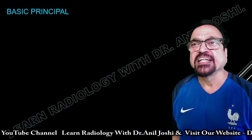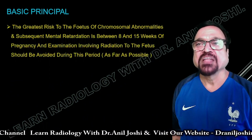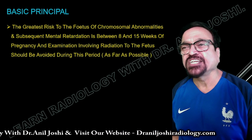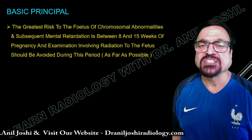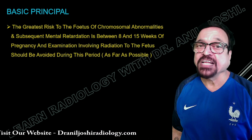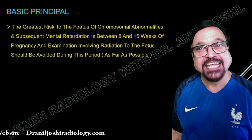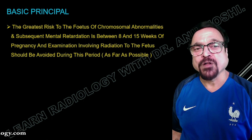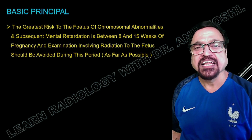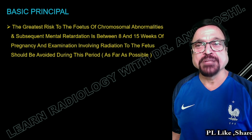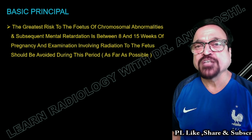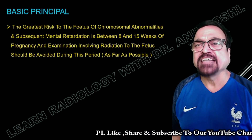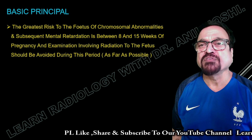The basic principle: the general risk to the fetus of chromosomal abnormalities and subsequent mental retardation is highest between 8 to 15 weeks. This is because maximum cell division is occurring at that stage. So 8 to 15 weeks is extremely crucial from the point of view of organ formation, cell division, and maximum risk of radiation. One has to be very, very careful during this period.